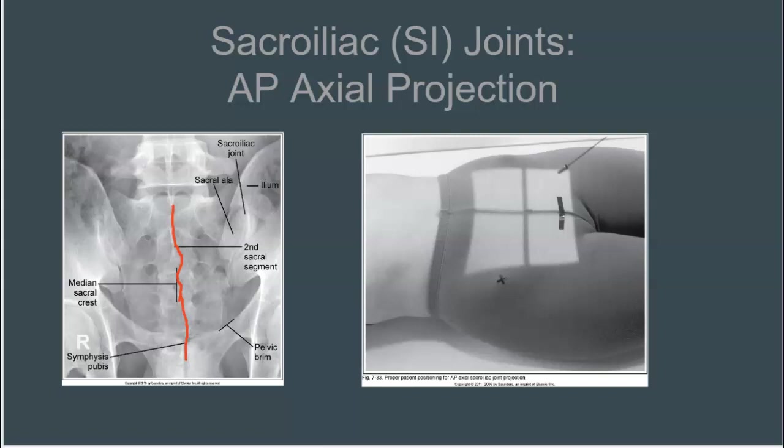Also the sacrum is demonstrated elongated. The fifth segment down here is superimposed by the pubic symphysis. Some of these image analysis guidelines are a bit more extensive than what Merrill's provides.